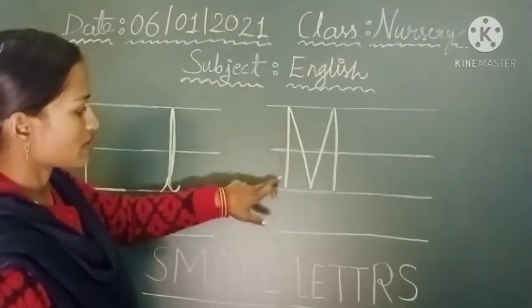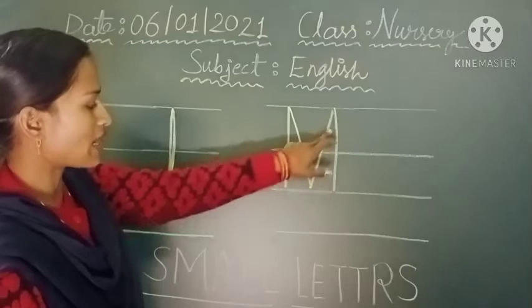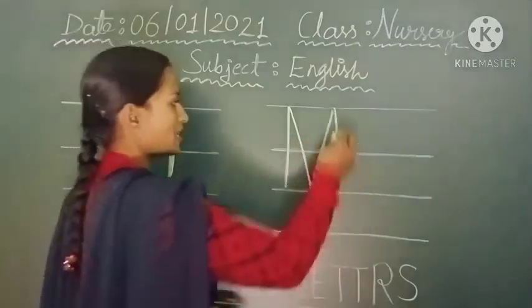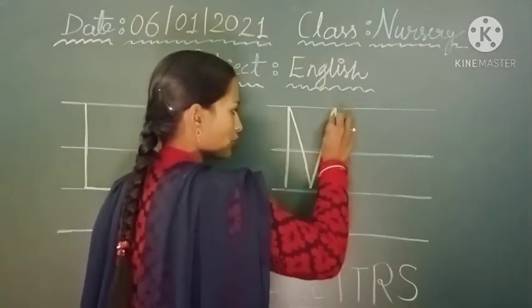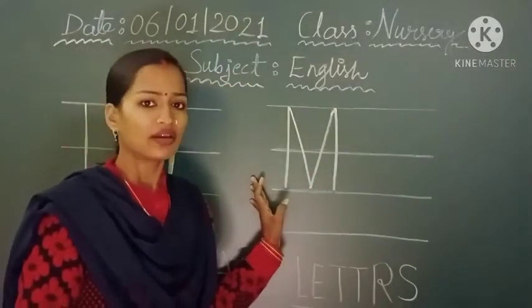First standing line, again slanting line, second slanting line, and in last we have to draw one standing line again. And your capital letter M is ready.